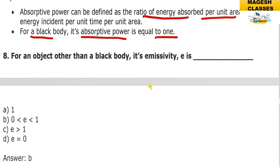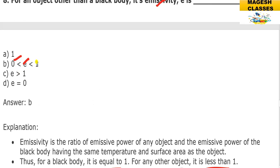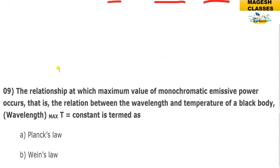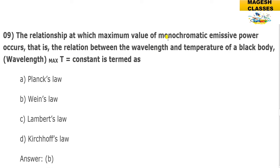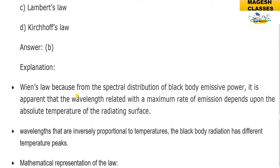For a black body the absorptive power equals one. For any other object, emissivity e is less than one. The relationship between the wavelength at maximum monochromatic emissive power and the temperature of the black body is termed Wien's law. From the spectral distribution, the maximum rate of emission depends upon temperature — lambda-max is inversely proportional to temperature.